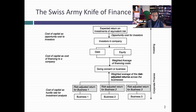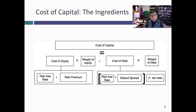It is an opportunity cost, it is a hurdle rate, and it's also a discount rate. People wonder how can it do all of this stuff? So let's step back and think about what goes into a cost of capital. The cost of capital is the cost of raising equity and debt in the market today to fund your operations.